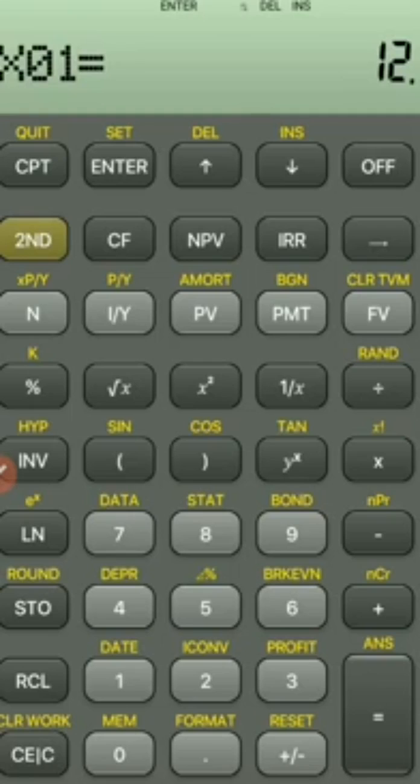Now we're ready to input the values. Enter 10, press ENTER, and press the down arrow. You'll see Y01 = 1, which you don't need to change. Press down again, then enter 20 and press ENTER.